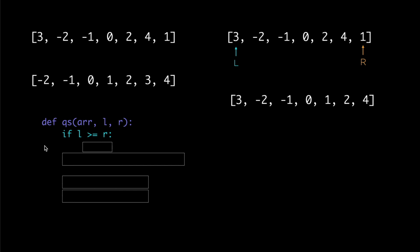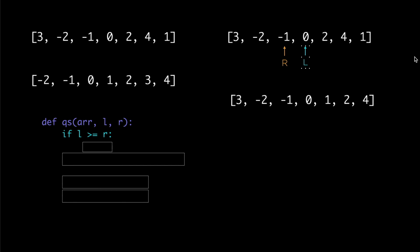The base case is when l is greater than or equal to r. If l is equal to r, they're pointing to the same element, which means the section of the array we want to sort has only one element — that's already sorted, so there's nothing to do. And if l is greater than r, the section has no elements, so there's nothing to do either. We can just return from this function.